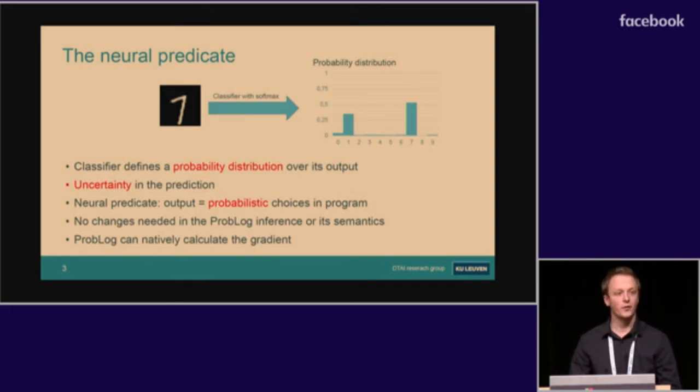Our neural predicate would then simply model the output of the neural network as a probabilistic choice in our program. And then we don't actually need to change anything about ProbLog, its inference, or its semantics.